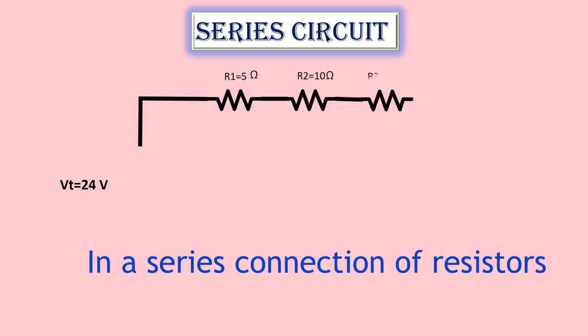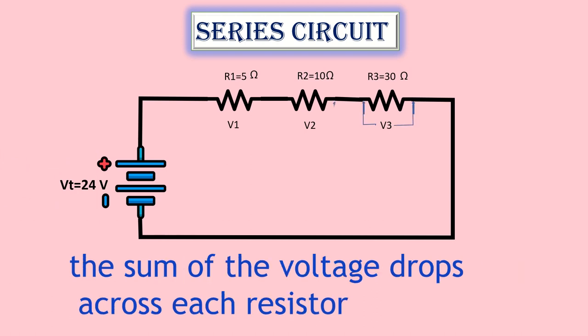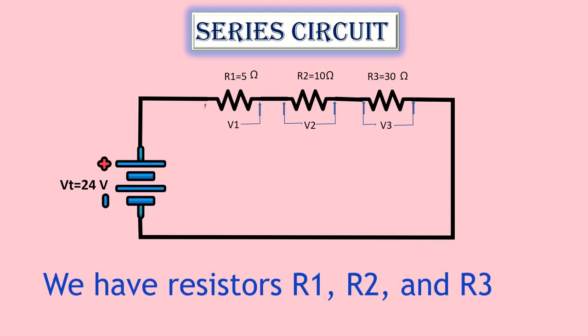In a series connection of resistors, the overall voltage drop across the connection is equal to the sum of the voltage drops across each resistor. We have resistors R1, R2, and R3.